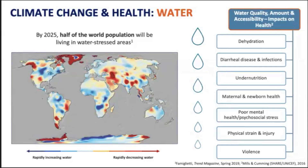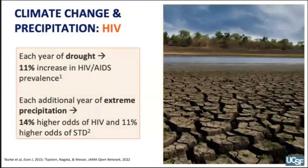Drought can lead to both malnutrition and dehydration, which can impair immune responses and increase susceptibility to infections. Flooding can contribute to waterborne infections and direct injury and death. In our own research, we have found that among people living with HIV, water insecurity is associated with incomplete viral suppression, having an AIDS-defining illness, as well as poor health-related quality of life.